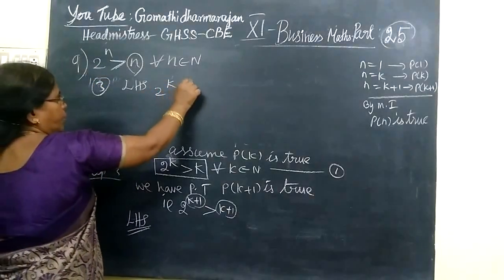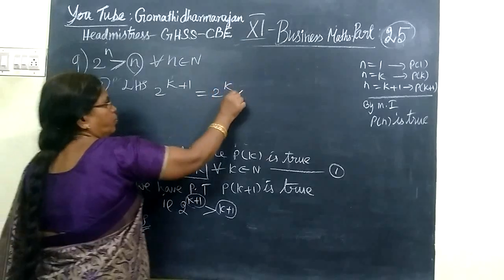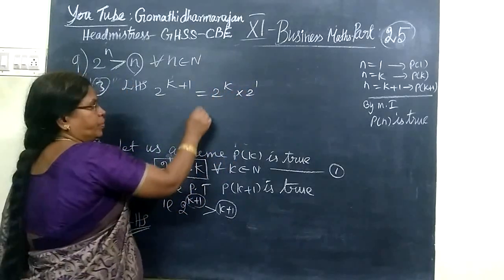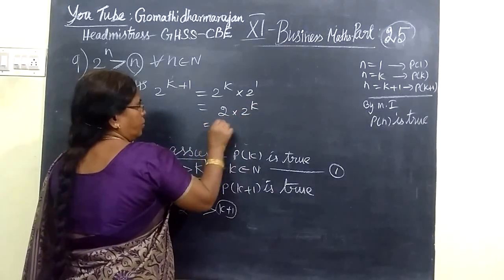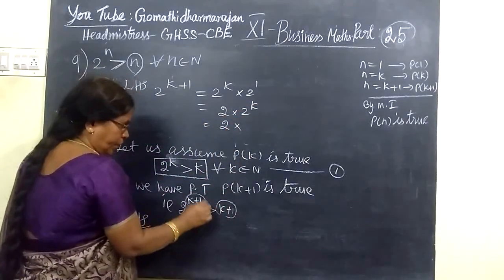This is the number. So 2 power K plus 1 equals 2 power K into 2 power 1. So 2 into 2 power K. So 2 into 2 power K.